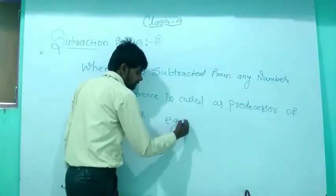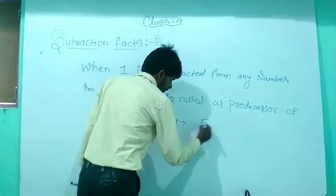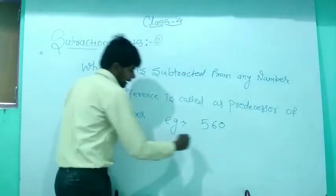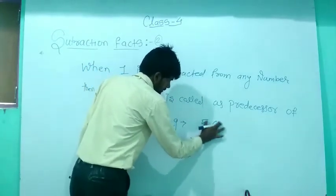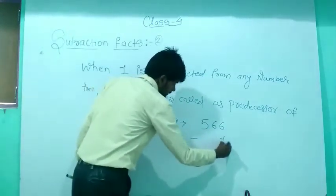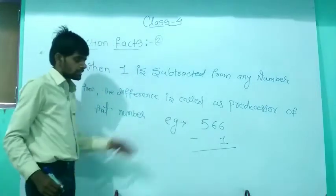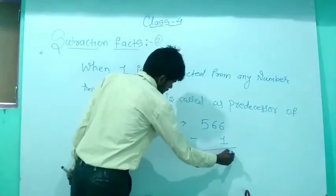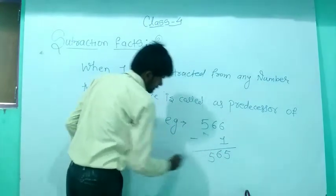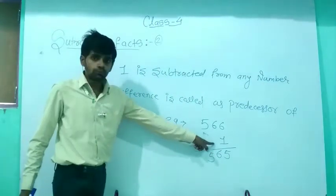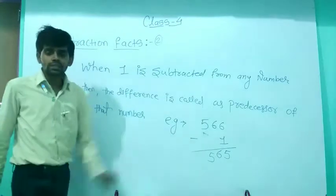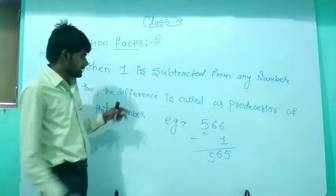Let's see the example: take 566. Let's subtract 1 from 566. Six minus one gives us 5, the tens 6 stays as it is, and the hundreds 5 stays as it is. So the difference is 565. The difference is called the predecessor of 566.